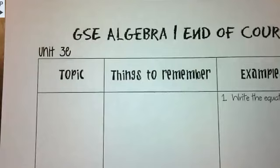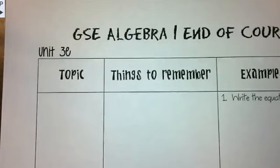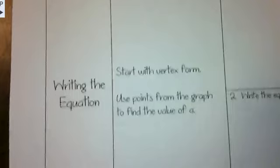We finally made it to the last video of Unit 3. So exciting. On this video, we are going to look at writing the equation of a parabola or quadratic from the graph, and then we're also going to look at inequalities and then applications. This one will probably go pretty fast — I didn't put as many examples, but I think you'll be fine.